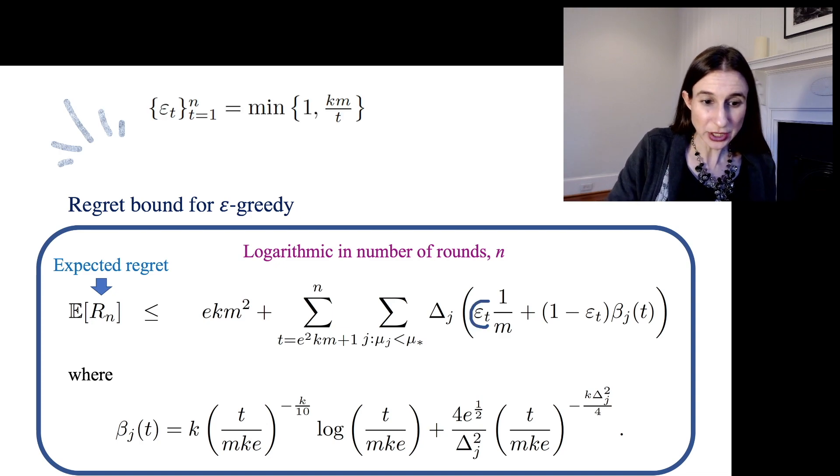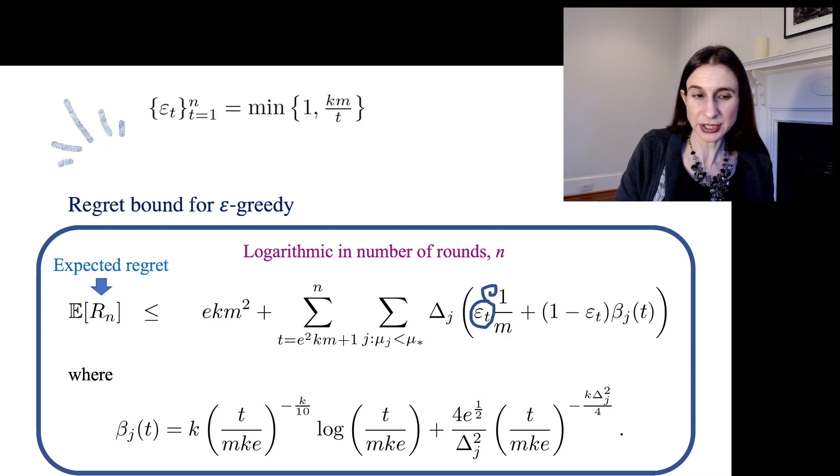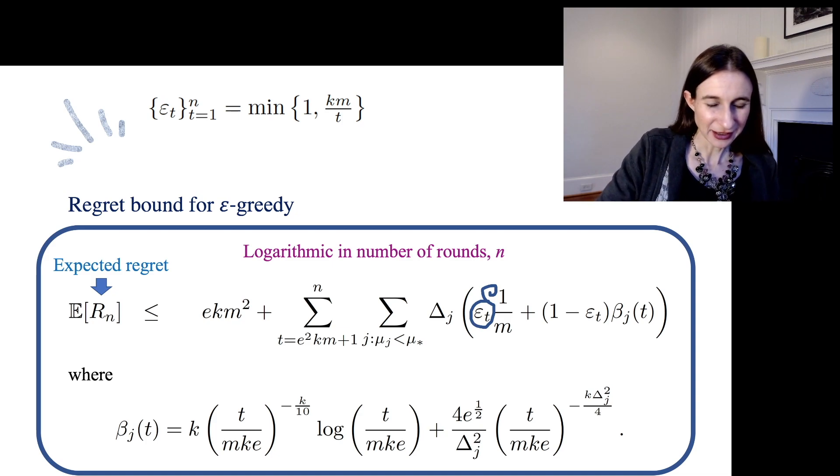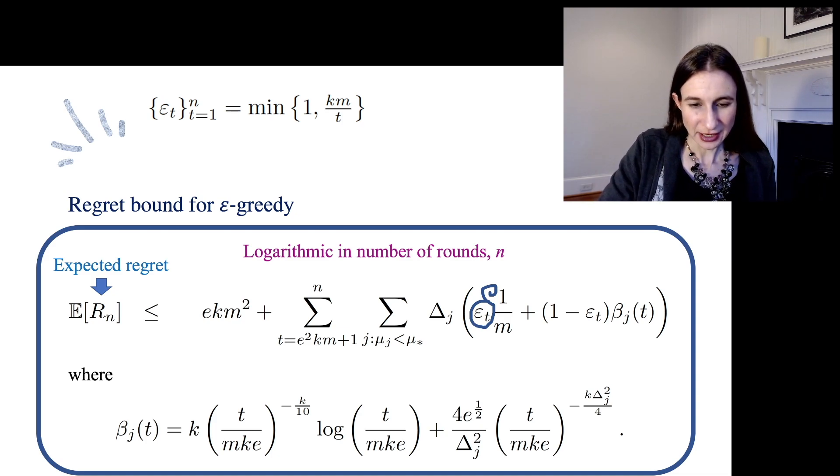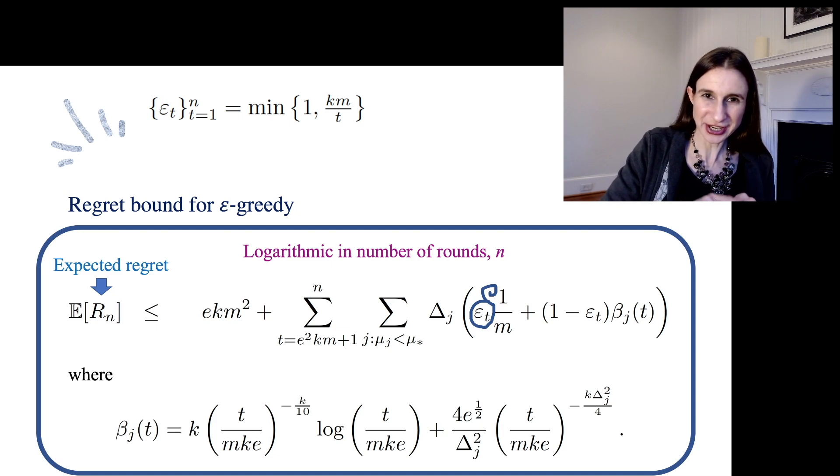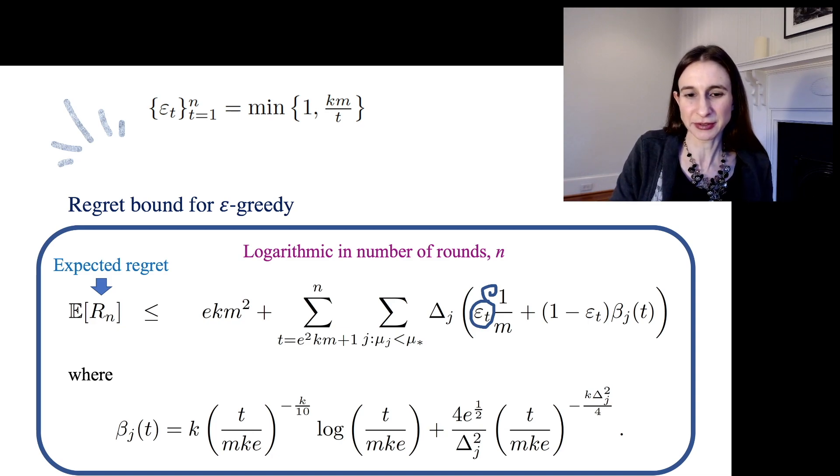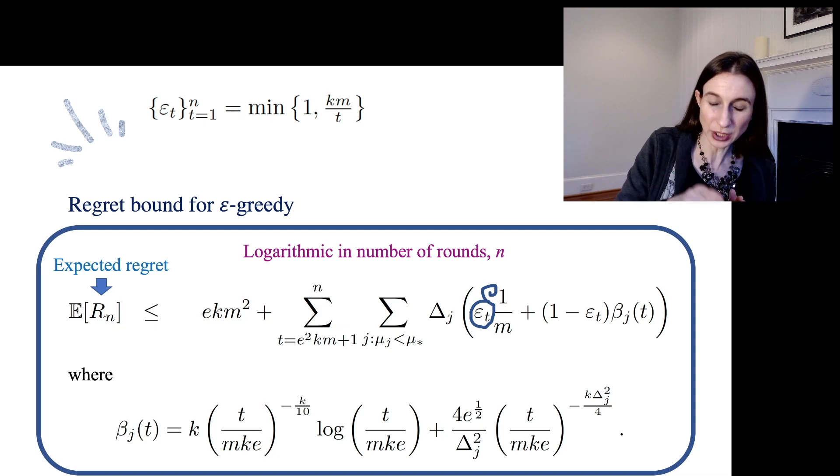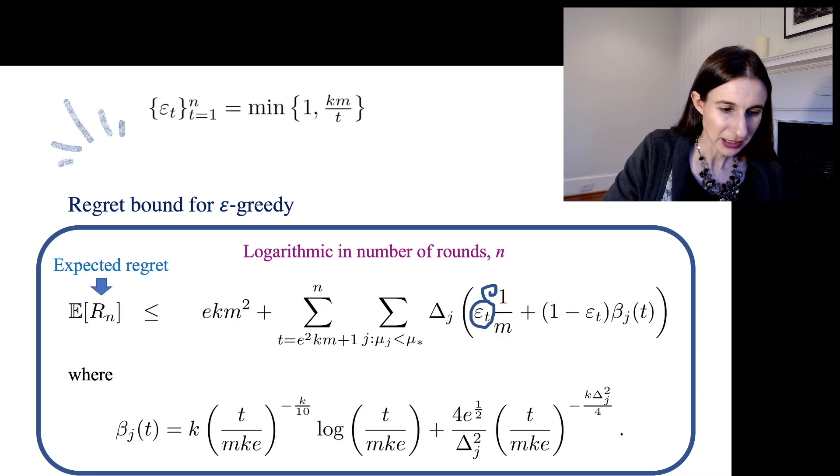We know that ε_t is actually order 1 over t because we defined it that way. That was just part of the initial statement of epsilon greedy. So that term is fine. It's the β_j term we have to worry about. Beta j has two terms in it. Both of them have to be order 1 over t. We don't need to worry about the 1 minus epsilon because that's a negative sign in front of it.